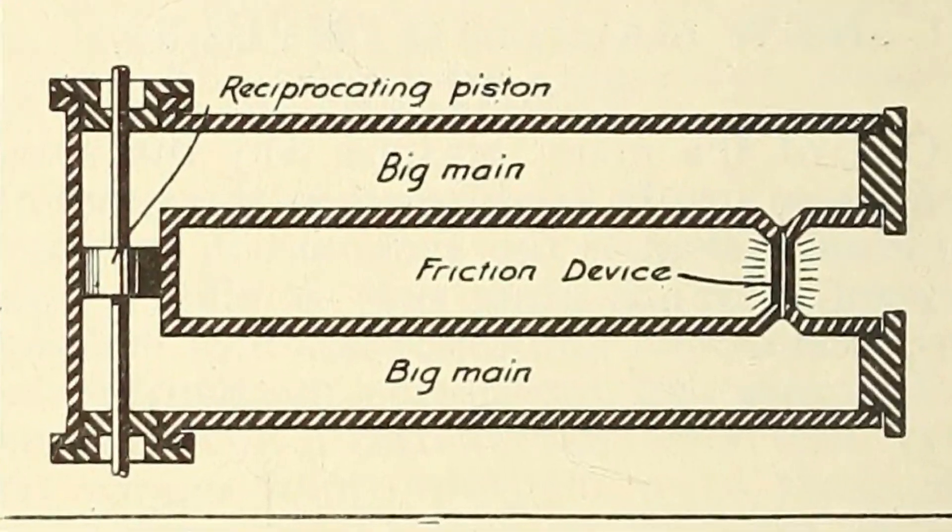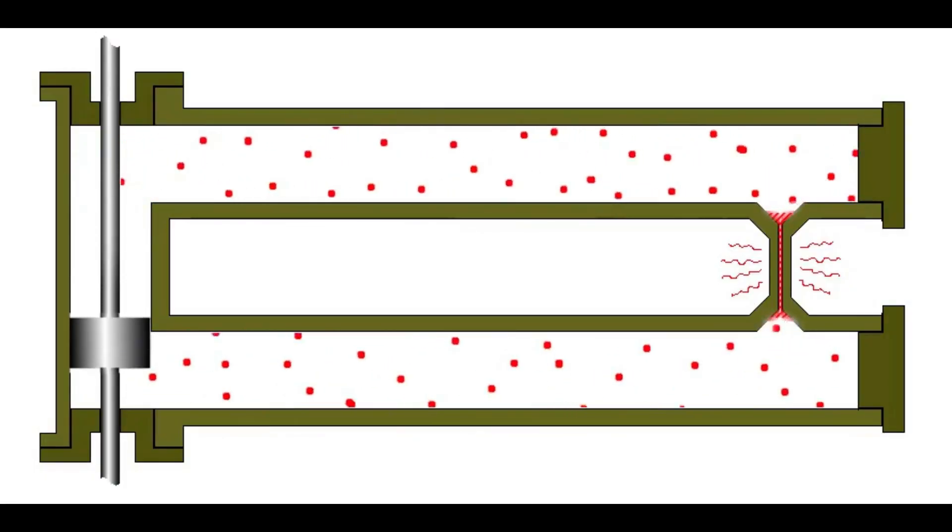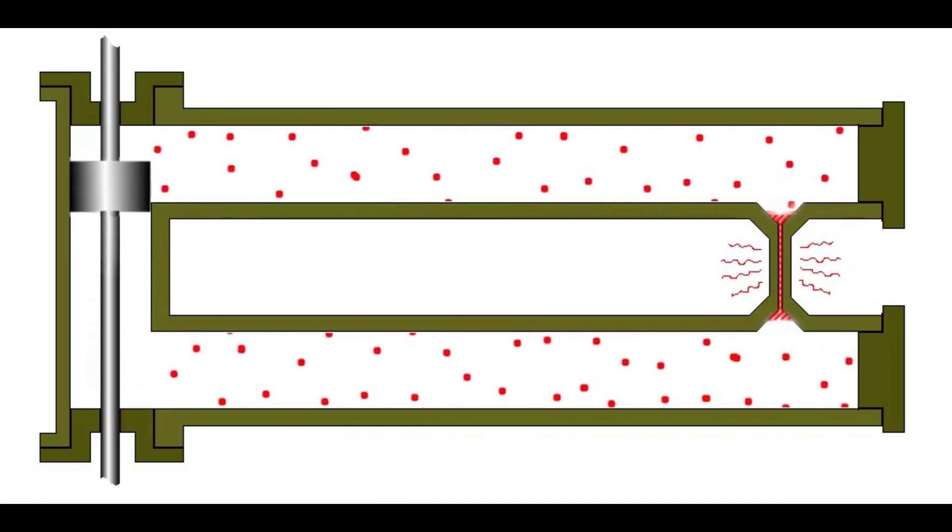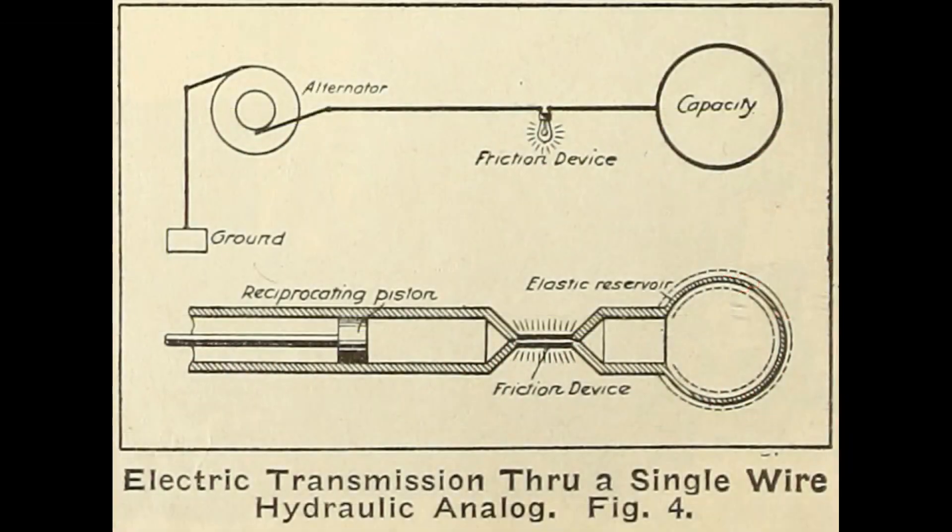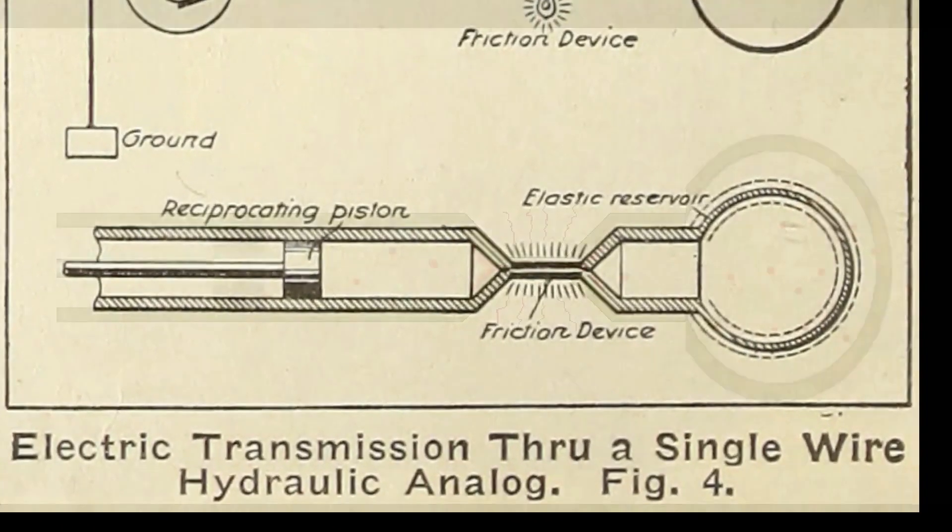In his experiments with high frequency currents Tesla discovered that the return wire can be replaced by a capacity. Thus you only need one wire to transmit electrical energy.